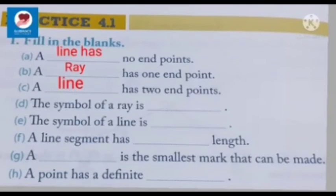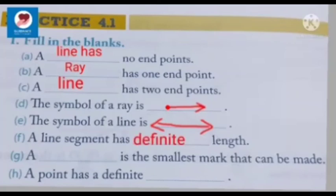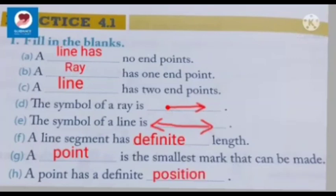Next question: What is the symbol of a ray? What is the symbol of a line? A line segment has a definite length. A point is the smallest mark that can be made. A point has a definite position.